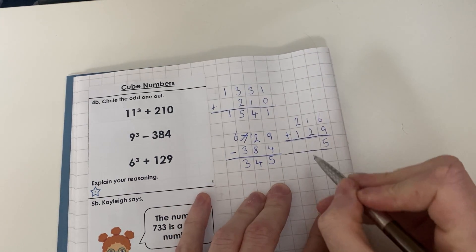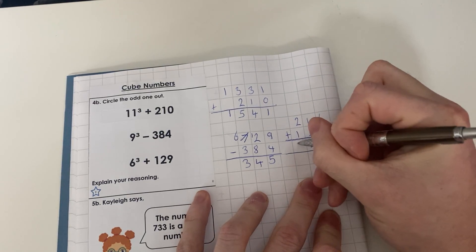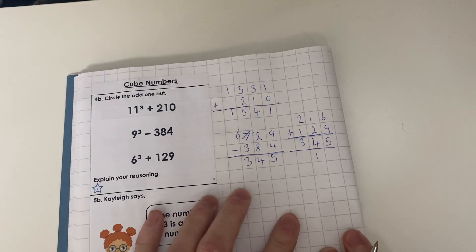6 + 9 = 15, 1 + 2 = 3 + 1 = 4, 2 + 1 = 3. So we've got our three answers: 1541, 345, 345.